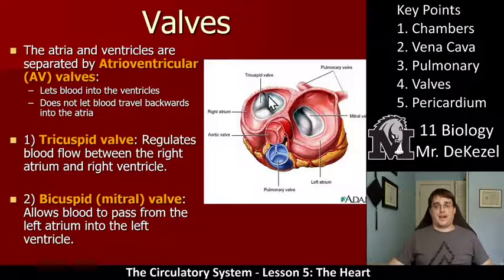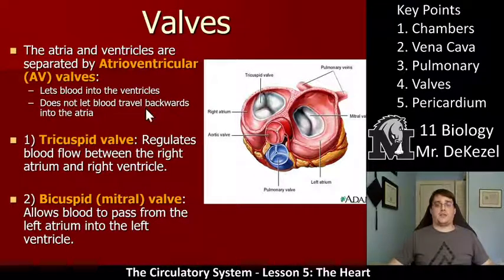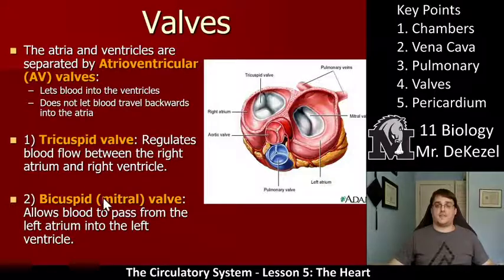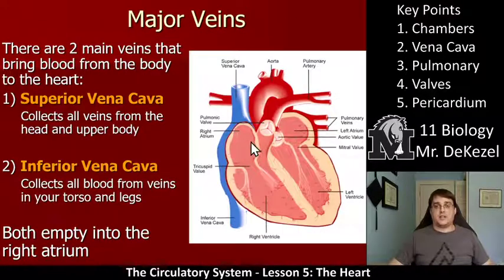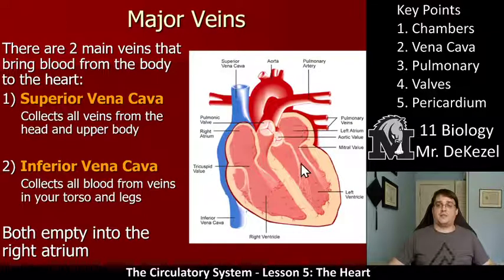There are four valves total. We have the atria and ventricles separated by the atrioventricular valve. The space between the atrium and ventricle is separated by the atrioventricular valve — it lets blood into the ventricles from the atrium and does not let blood flow backwards. There's the tricuspid valve between the right atrium and the right ventricle, and the bicuspid valve — also called the mitral valve — between the left atrium and the left ventricle.